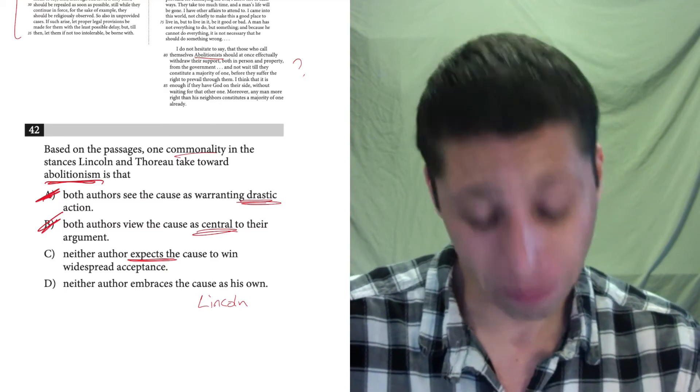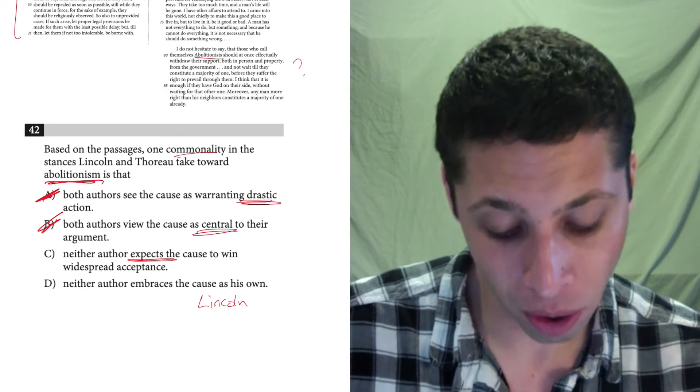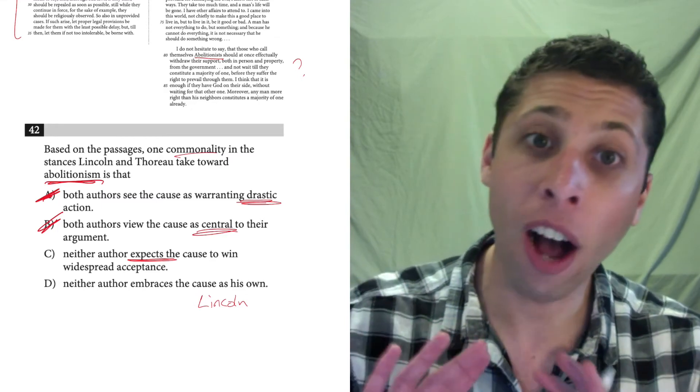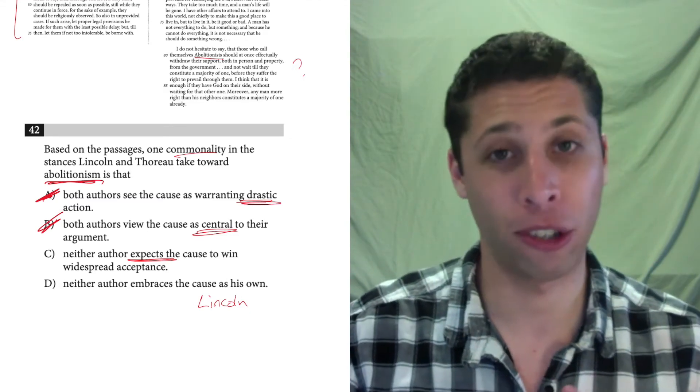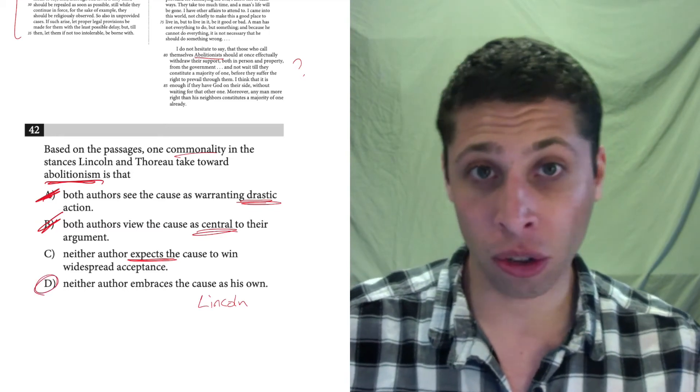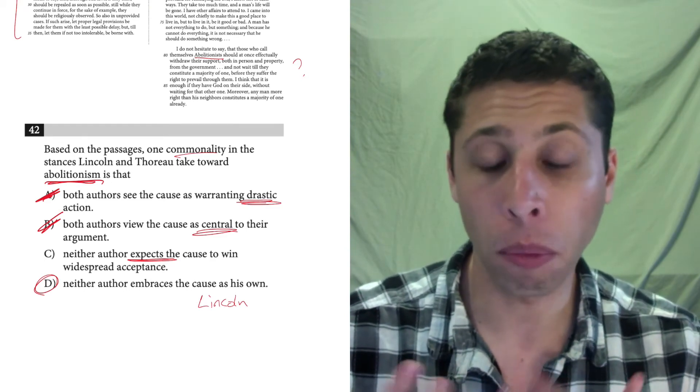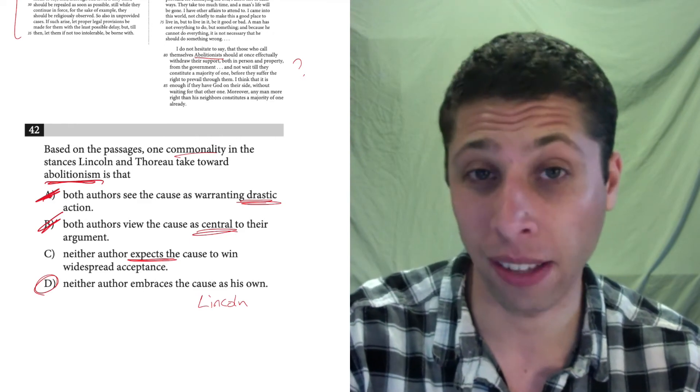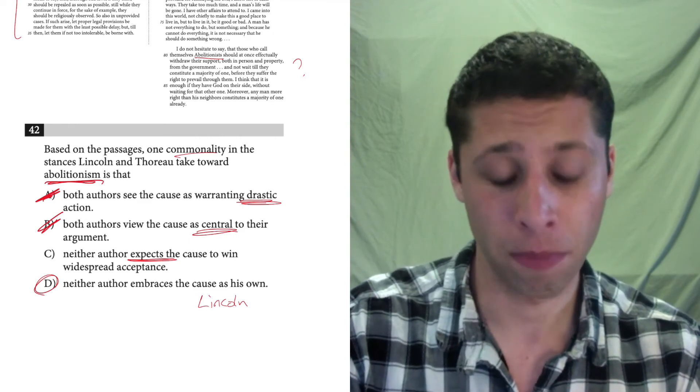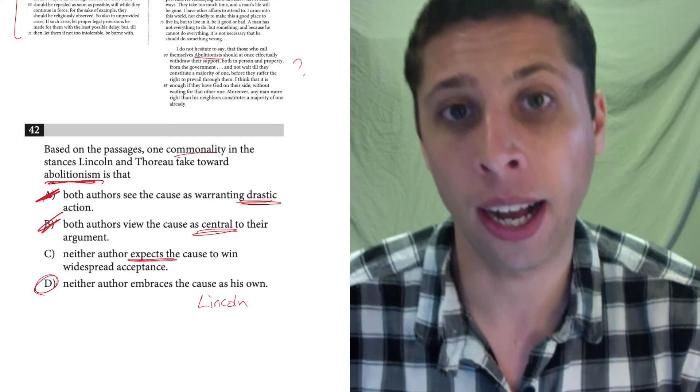Let's look at Thoreau again and see if we can make D work for Thoreau. He says, I do not hesitate to say that those who call themselves abolitionists. Okay, he's not embracing it. He's saying other people call themselves abolitionists. Other people, not me. I'm not an abolitionist. So, it's a stretch, but sometimes we need to do this stretching, and we really only understand what we're reading and what we're looking for once we've looked at the choices, gotten rid of some terrible ones, and kind of narrowed it down to a couple that could make sense.